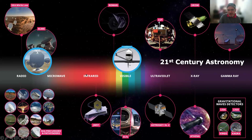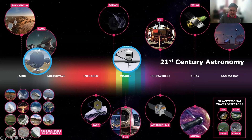And of course you have the big optical telescopes, the ELTs that are currently being built in Chile and in Hawaii. You also have another kind of observatory that will look at specific events like gamma rays — this is the Cherenkov Telescope Array.